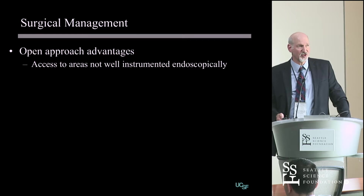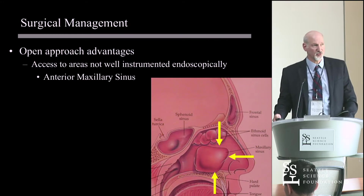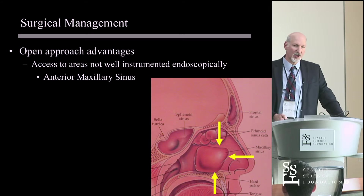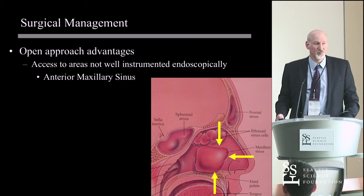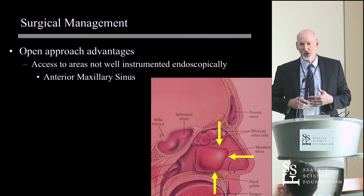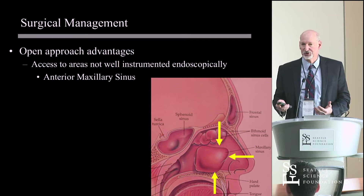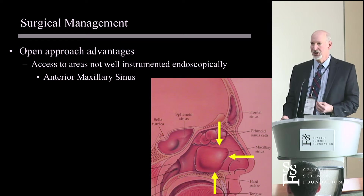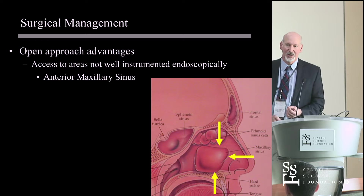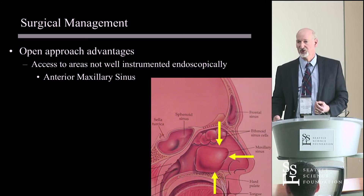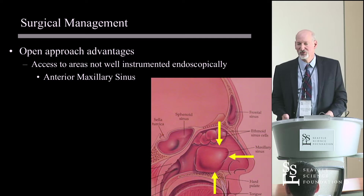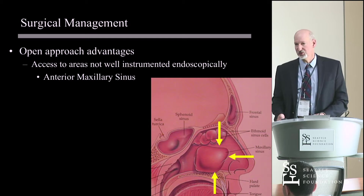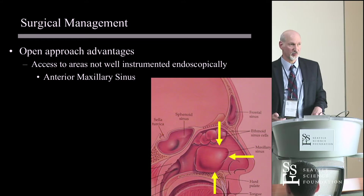Open approaches can definitely access some areas that are more difficult to instrument endoscopically. The anterior maxillary sinus is one of those. You can argue for an endoscopic Draf's approach where you remove part of the piriform aperture, but I've done that and haven't been particularly happy with it. A sublabial incision is not the worst thing, so I'll typically combine an endoscopic approach with a sublabial approach for cases with anterior or inferior involvement.